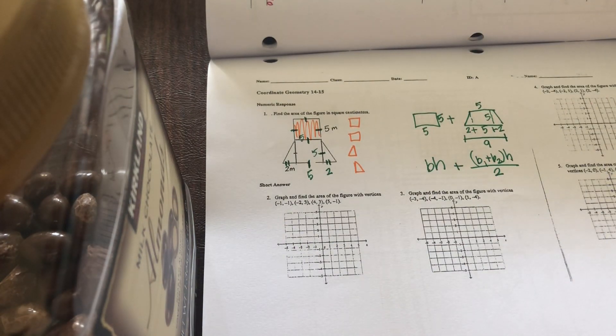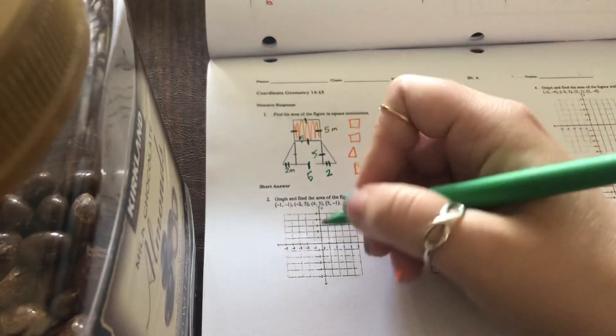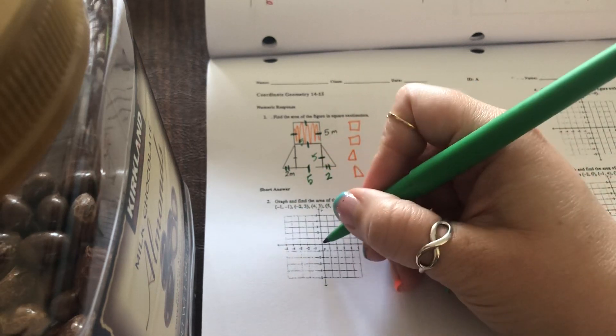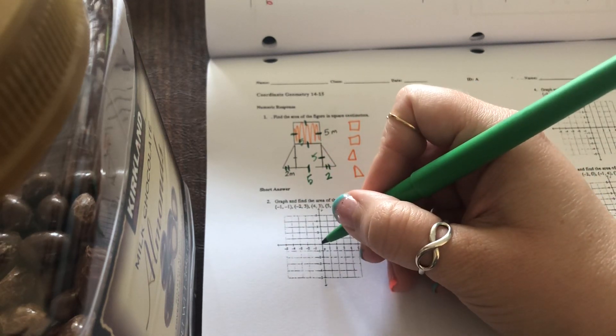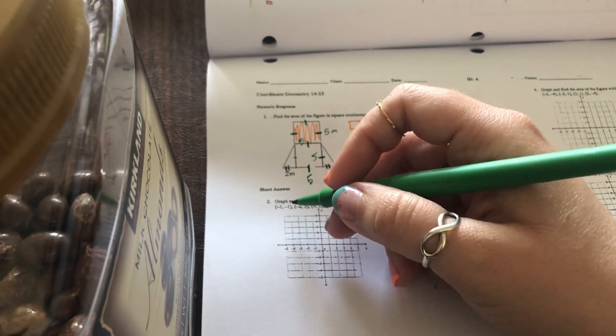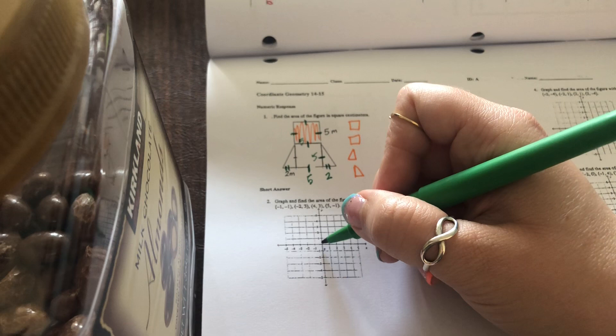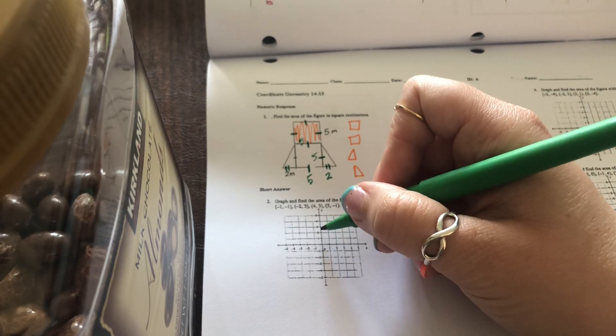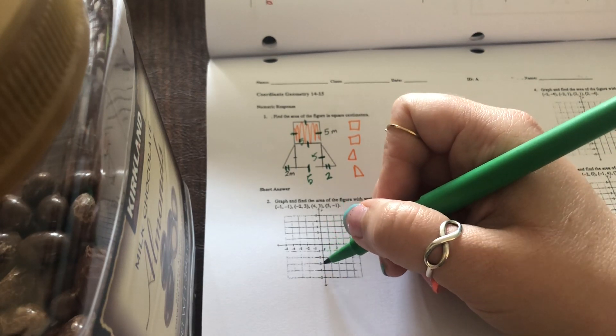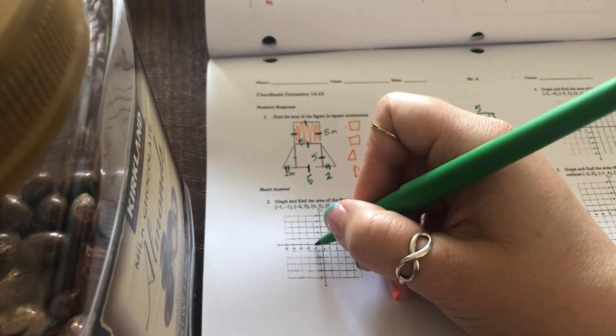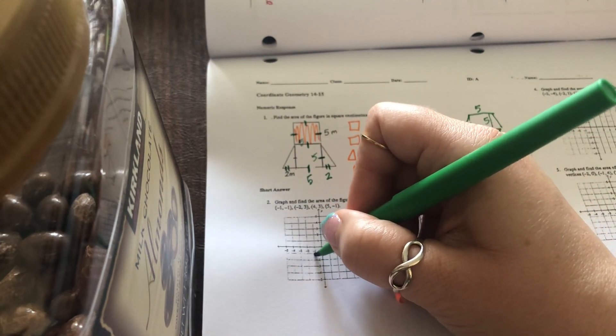Your first step is to plot the points. So you always start at your origin. The first point tells you to go right or left. If it's positive, you go right that many. If it's negative, you go left that many. The second number tells you to go up or down. If it's positive, you go up that many. If the second number is negative, you go down that many. So negative one means left one and then down one. There's my first point.